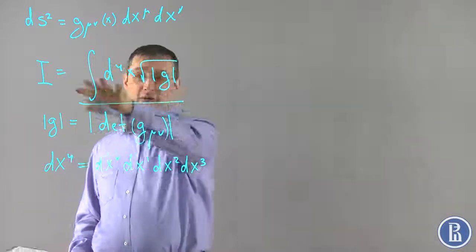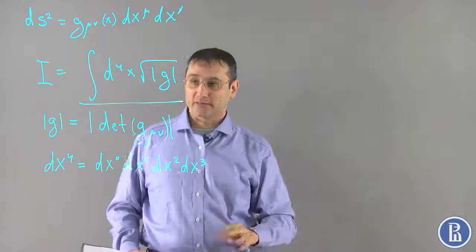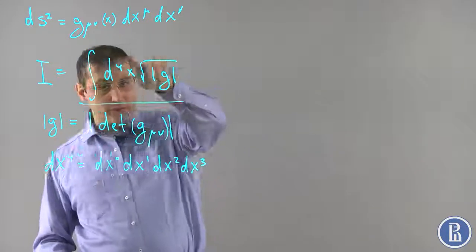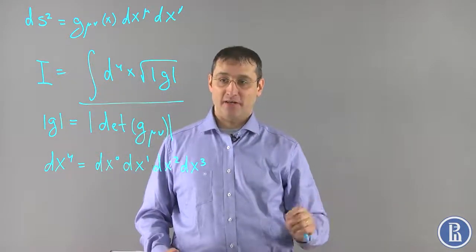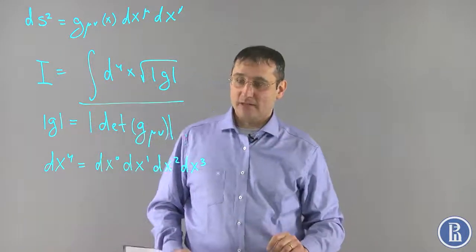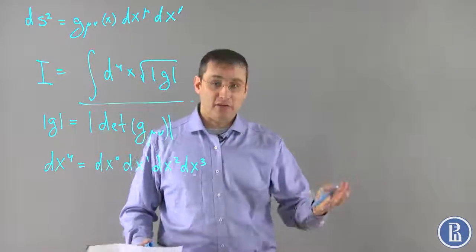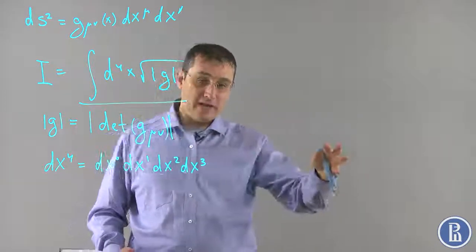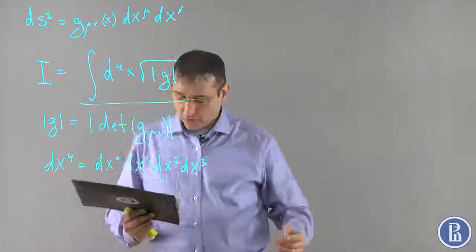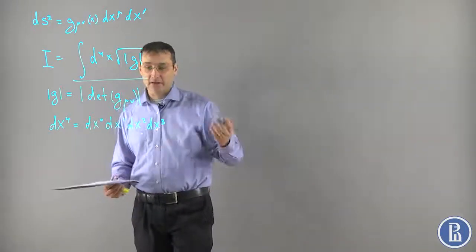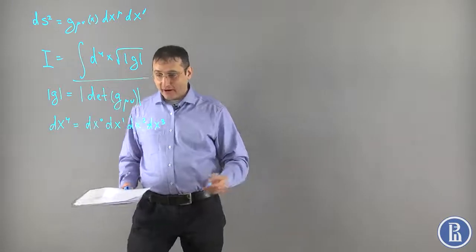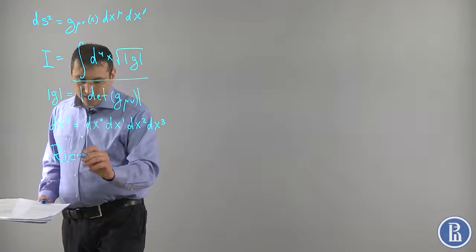The problem with this quantity is that if one applies the minimal action principle to an action proportional to it, one obtains only algebraic equations for the metric, because this quantity contains no derivatives of the metric. We want differential equations — containing derivatives of the metric along space and time directions — which describe how the metric changes in space and time. So we need to go further and find something that contains derivatives of the metric and is still invariant. That invariant we know from the end of the last lecture: it is the Ricci scalar.